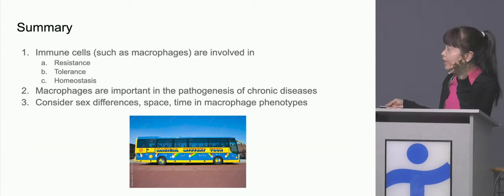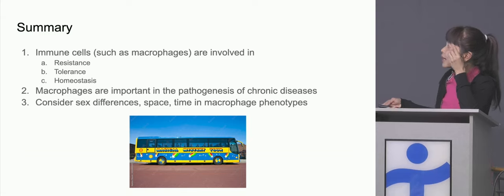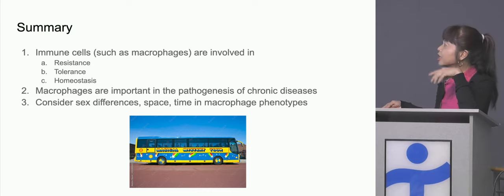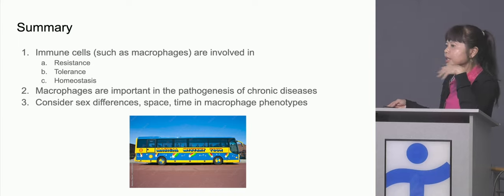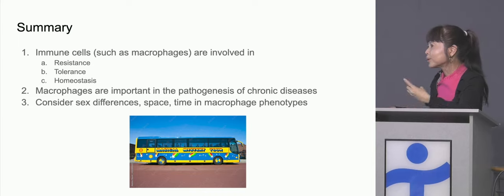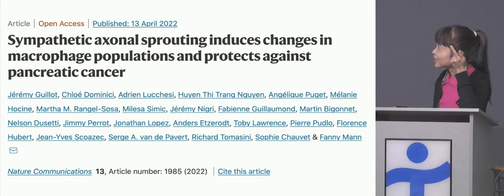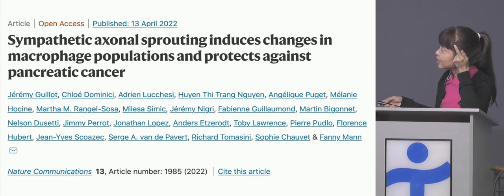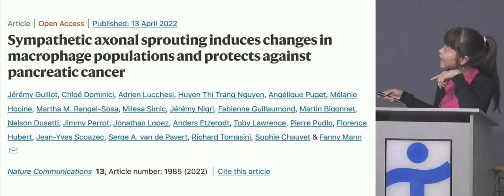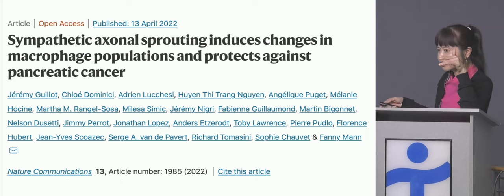Summary: I hope the takeaway for you is that immune cells are involved not just in resistance and fighting infection, but also in tolerance and in homeostasis — maintaining the health of your tissues. Macrophages are really important in the pathogenesis of most chronic diseases. When you're talking about macrophages, you have to consider sex differences, space, time, and look at different macrophage phenotypes — they're not all the same. They are everywhere, and they are your best friend.